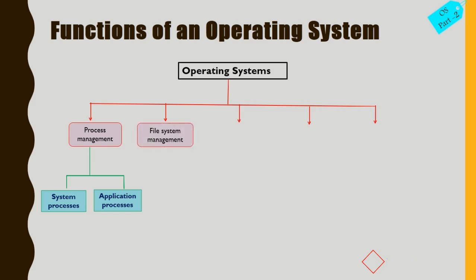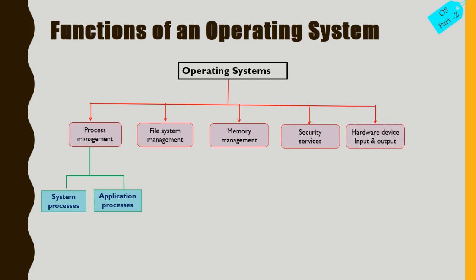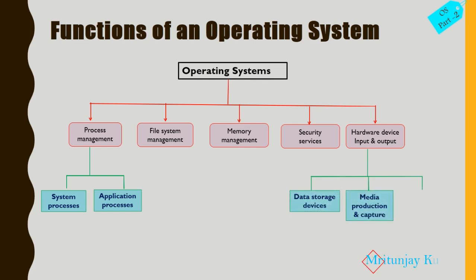The second function is file system management. Third is memory management. Fourth is security services. The next function is controlling hardware devices, including input and output. These hardware devices include data storage devices and network communication. We will now discuss all the functions one by one in brief.